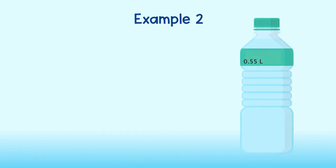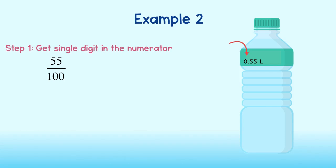Let's take a look at the bottle of water. It is fifty-five hundredths of a liter, written as a fraction. How can we estimate this as a single digit number times the power of ten? Let's first get a single digit in the numerator. To get that single digit, we must first round the numerator to the highest place value — in this case, the tens place. This ensures we have a number that ends in all zeros. Since fifty-five rounds to sixty, we approximate this as sixty one-hundredths.